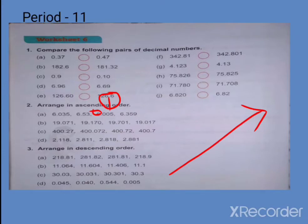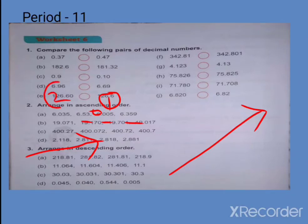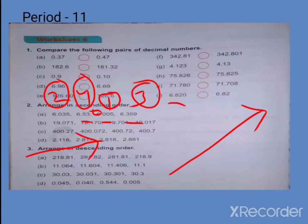अब second number पर क्या आना चाहिए? 6 वाले हैं बाकी सभी — whole number सबका same है, left side वाले digit same हैं। Next place को compare करेंगे — left से comparison start करनी है और right की साइड चलना है। Next digit को compare करें — इसमें 0 है, इसमें 5 है, इसमें 3 है। तो 0 is smaller, so second place पर यह आएगा। Then 3 is smaller, फिर 4। Like में convert नहीं करते हैं तो आप mistake कर सकते हैं।